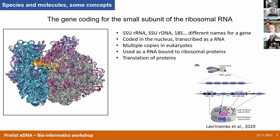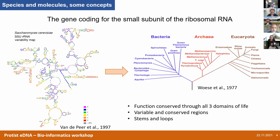If you do a two-dimensional map of the small subunit of the ribosome, you will see that you have this organization in stems and loops. When you have stems, the two parts of the stem must match together. When you have a loop, it's more free. So the sequence of the two stems must be very conserved, whereas in the loop the size and sequences can change. This means you have evolutionarily very conserved regions in the SSU and evolutionarily less conserved regions.